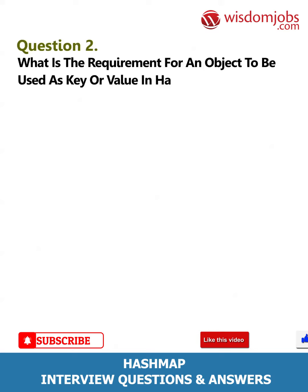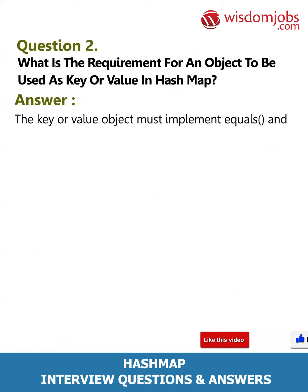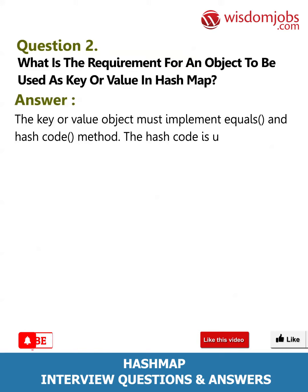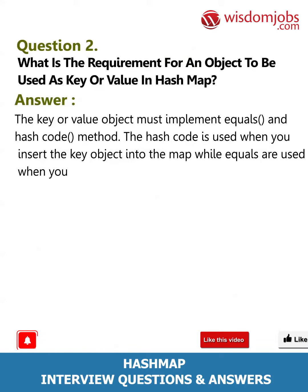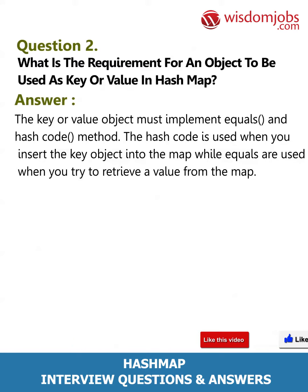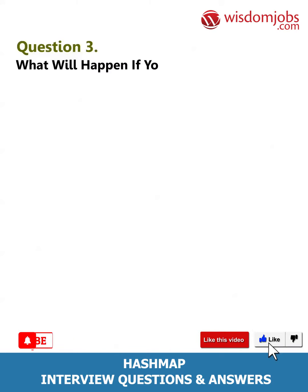Question 2: What is the requirement for an object to be used as a key or value in HashMap? Answer: The key or value object must implement the equals() and hashCode() methods. The hash code is used when you insert the key object into the map, while equals() is used when you try to retrieve a value from the map.